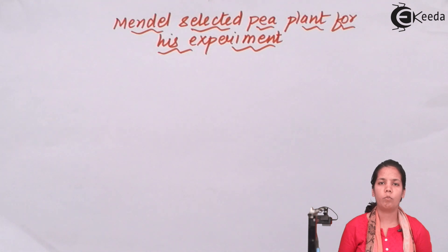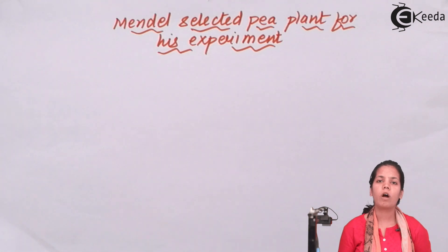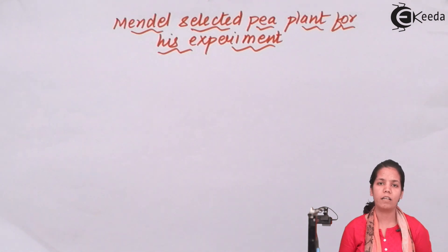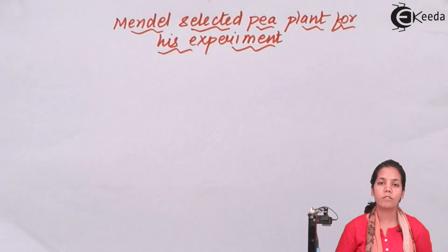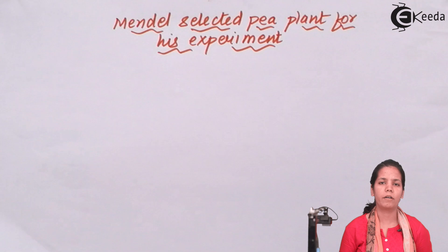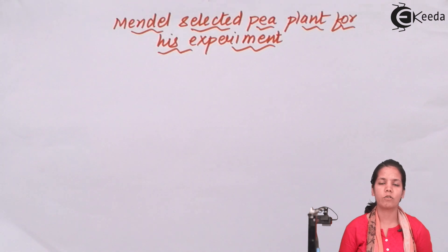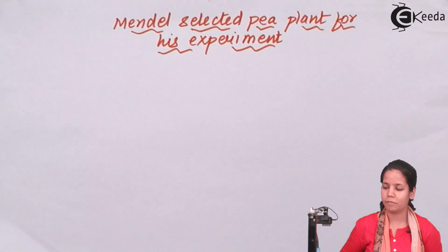Throughout his career in genetics, Mendel wholly and solely did experiments on the pea plant. Whether it was monohybrid cross or dihybrid cross, everything — he did his experiments on the pea plant.